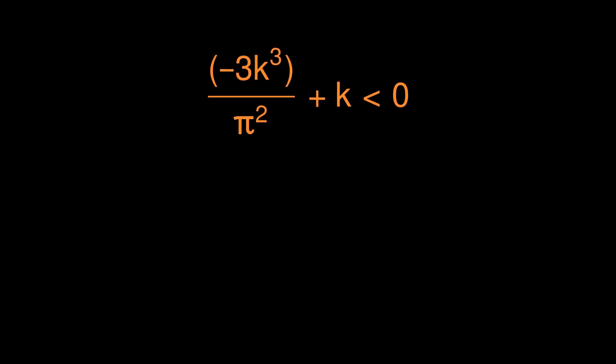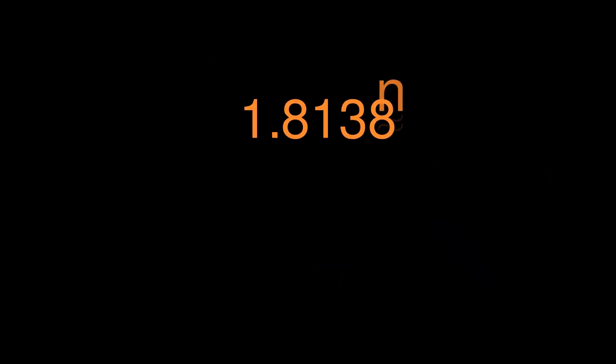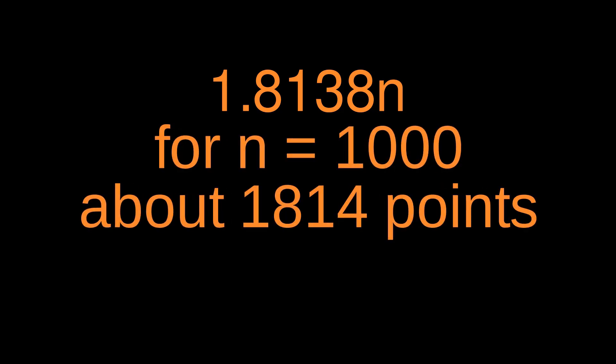Some algebra reveals that the coefficient is negative when k is more than pi over root 3, or about 1.8138. So the conjecture is that this is the limit. For an n-by-n grid, you're not likely to be able to fit many more points than n times pi over root 3 without having three of them in a line.